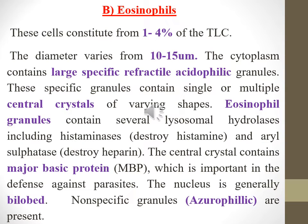Eosinophils constitute from 1 to 4 percent of the total leukocyte count. The diameter varies from 10 to 15 micrometers. The cytoplasm contains large specific refractile acidophilic granules. These specific granules contain single or multiple central crystals of varying shapes. Eosinophil granules contain several lysosomal hydrolases including histaminase, which destroys histamine, and aryl sulfatase, which destroys heparin. The central crystal contains major basic protein, important in defense against parasites. The nucleus is generally bilobed. Non-specific azurophilic granules are also present.